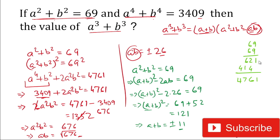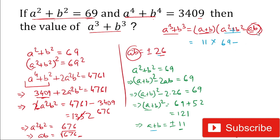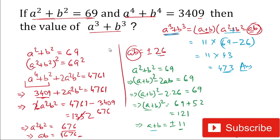Now we have a + b = 11 and ab = 26. Substituting into the formula: a³ + b³ = (a+b)(a² + b² - ab) = 11 × (69 - 26) = 11 × 43 = 473. So the answer is 473. This was a very easy problem — you just need to follow the steps carefully.